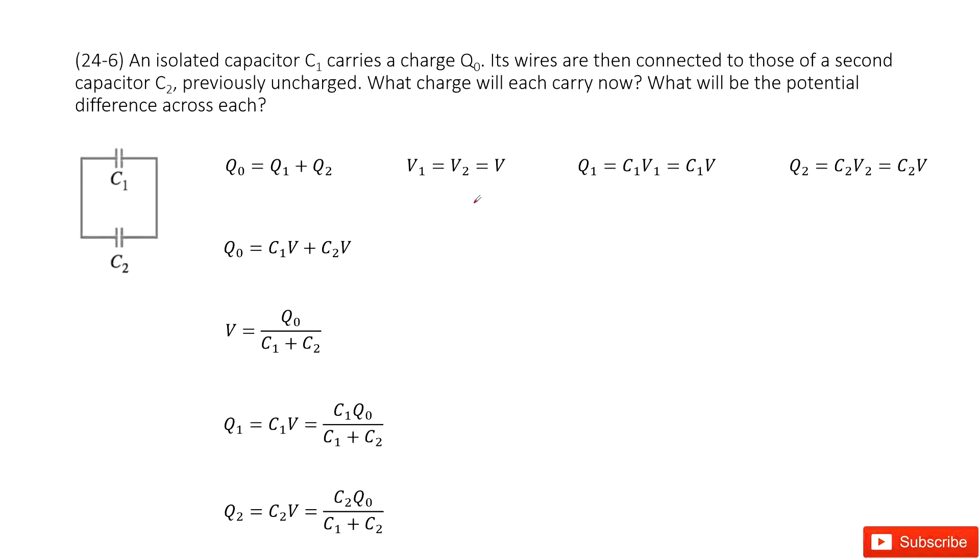So there you can see, we have isolated capacitor C1, so initially it carries the charge Q0. Now its wire is then connected with the second capacitor C2. The question asks what charge will each carry and what will be the potential difference across each.